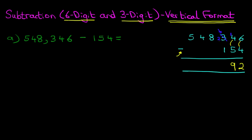Moving on to the hundreds, we have got 2 minus 1. 2 minus 1 is 1. That was nice and easy. As for the three other digits, the 548, they are subtracting nothing, so they remain the same. Let's write those in.